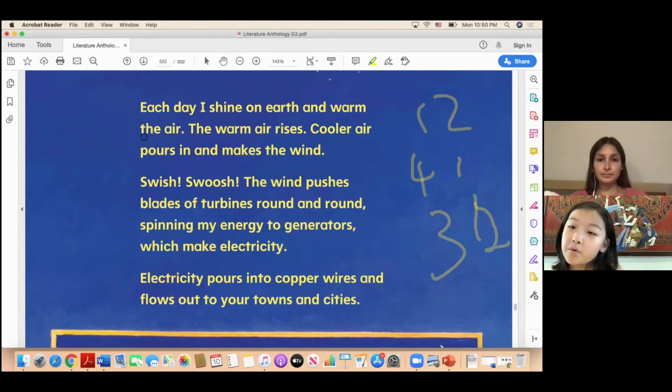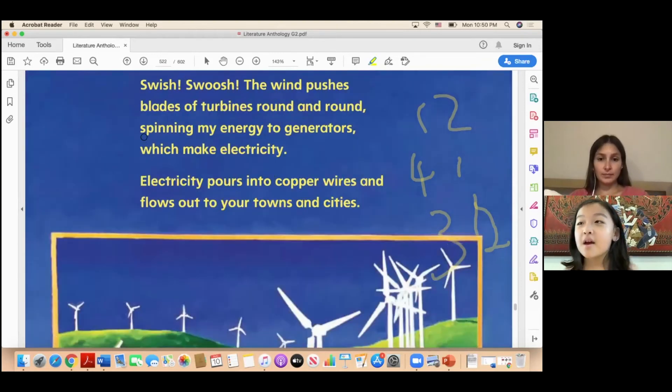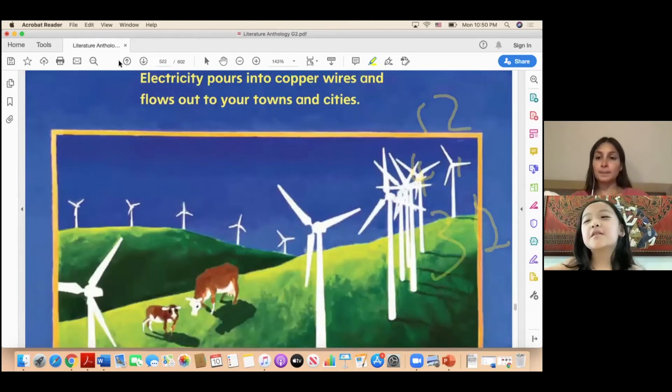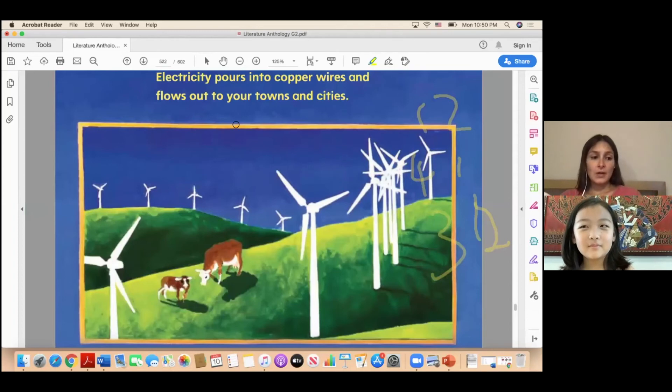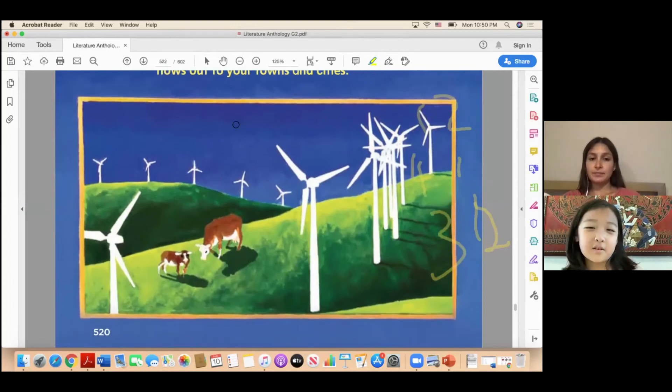Electricity pours into copper wires and flows out to your towns and cities. But what if there isn't a town or city, it is a slum? Slum? Well, even slums use a little bit of electricity. Not all homes, but some of them do. Yeah, and it didn't say slum, so maybe just one or two houses have electricity. Yeah, okay. Famous one, famous one. Have very rich.